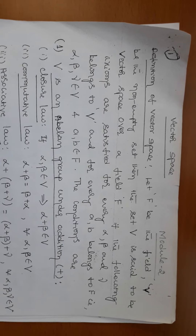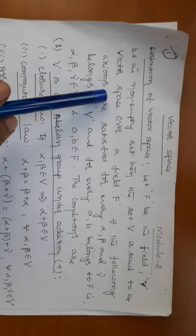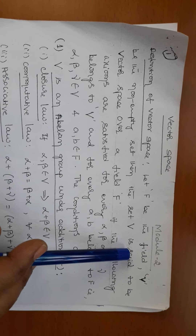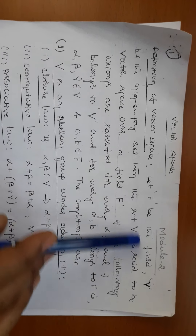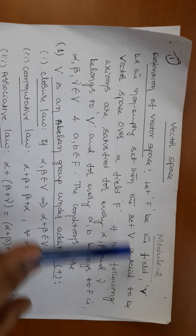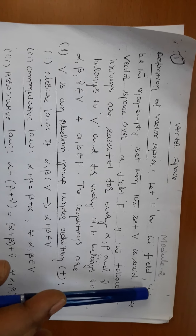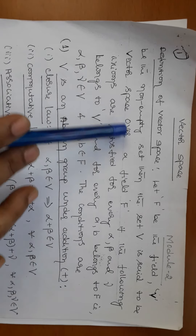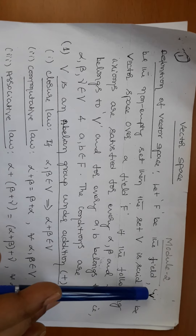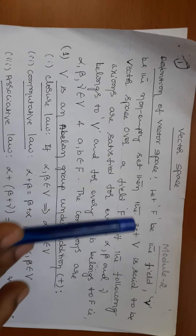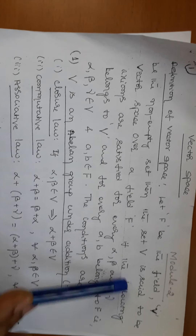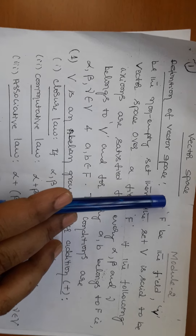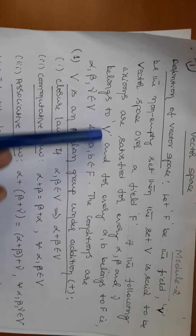Let us start with the definition of vector space. To define a vector space, we require a field. A field can be the set of real numbers, positive integers, integers, negative integers, or complex numbers — these are scalars. Let F be a field and V be a non-empty set. The set V is said to be a vector space over the field F if the following axioms are satisfied.